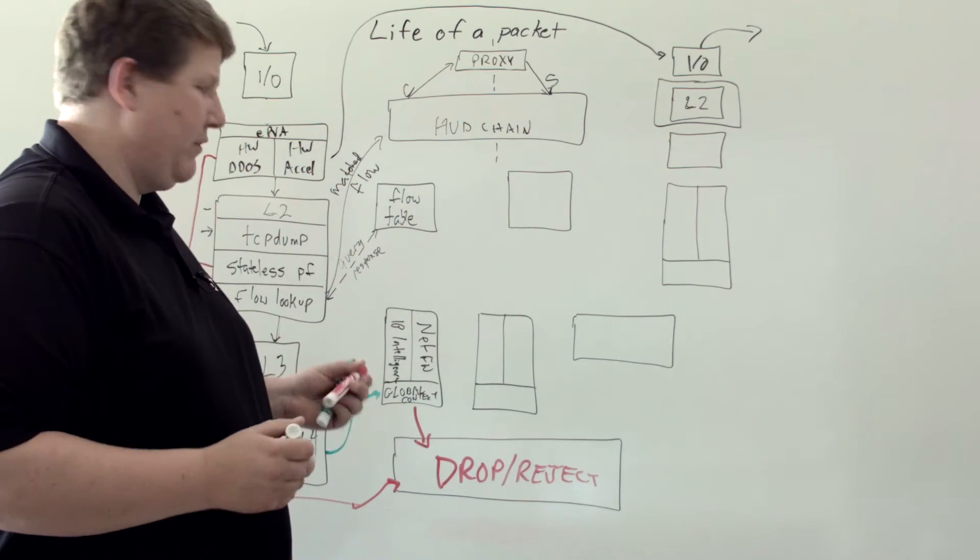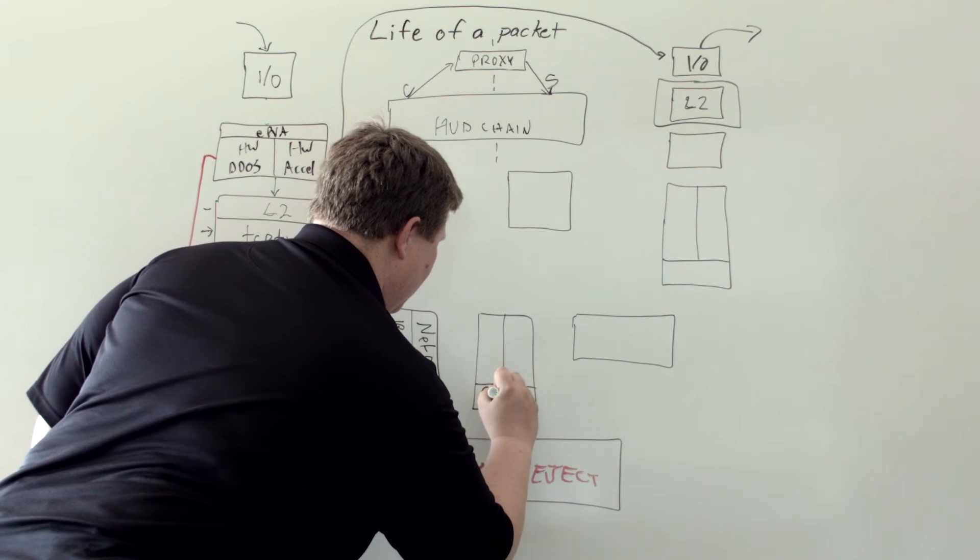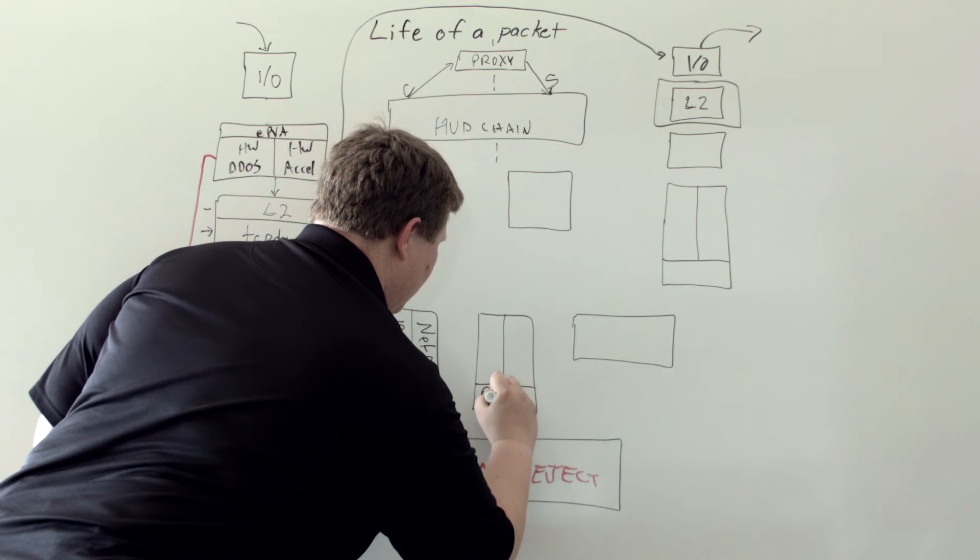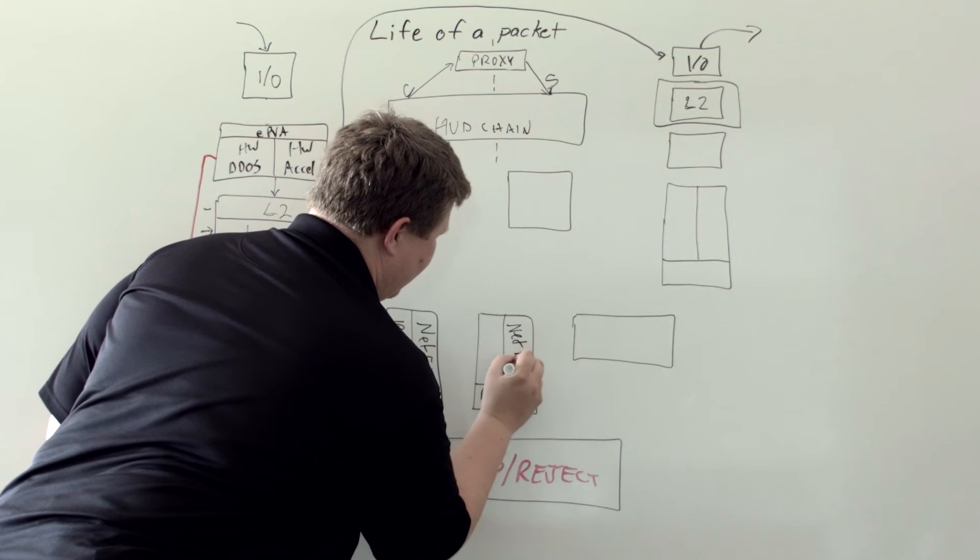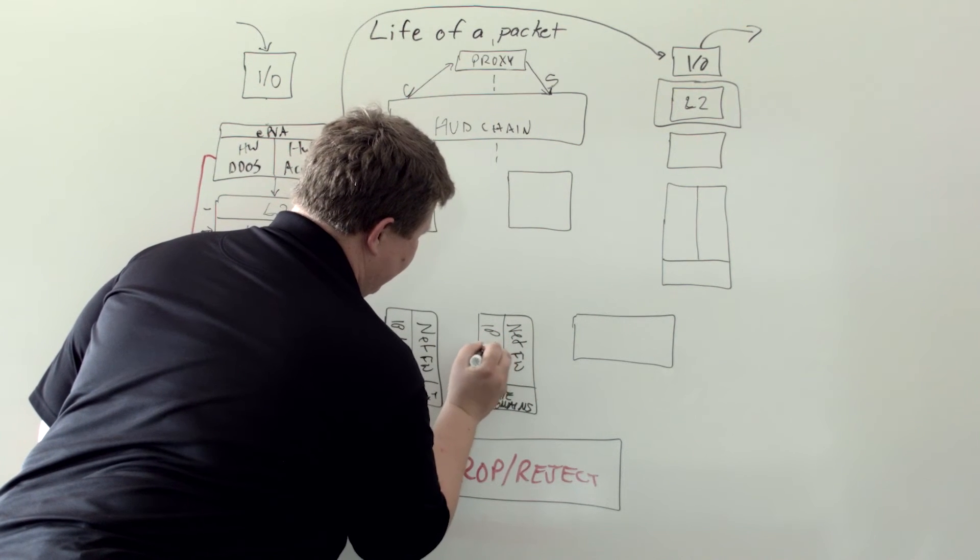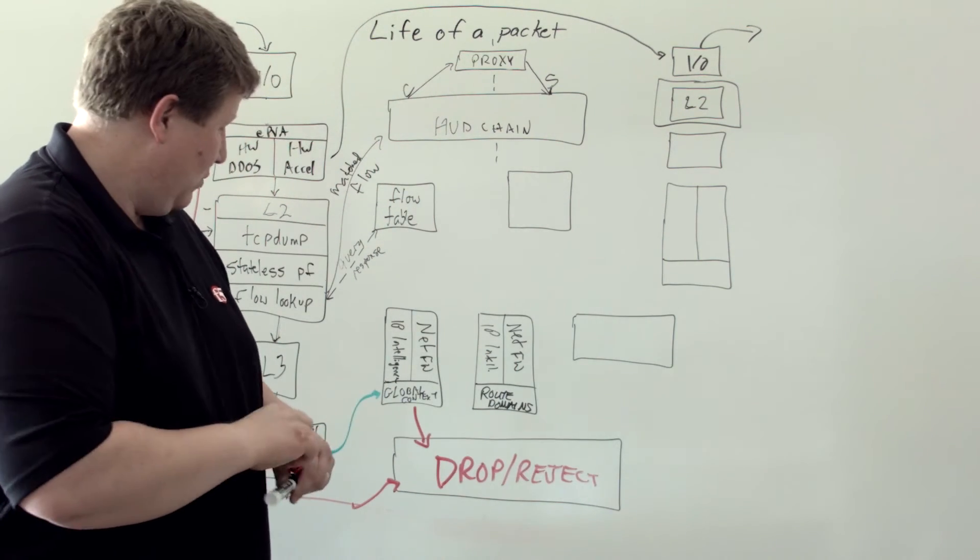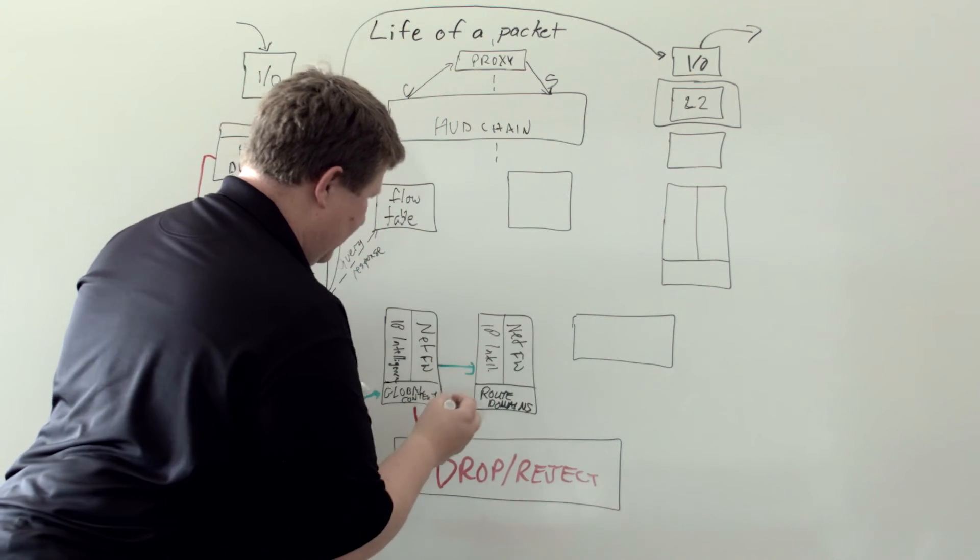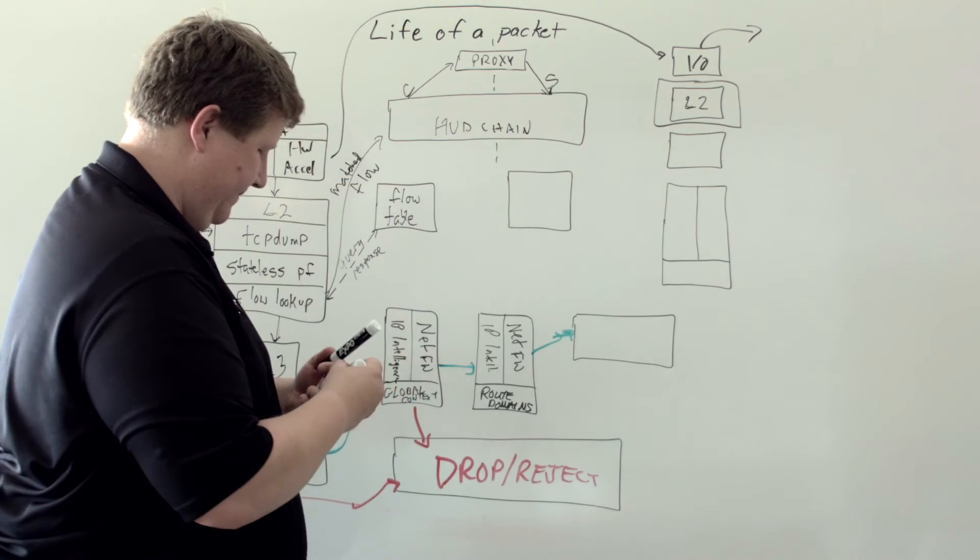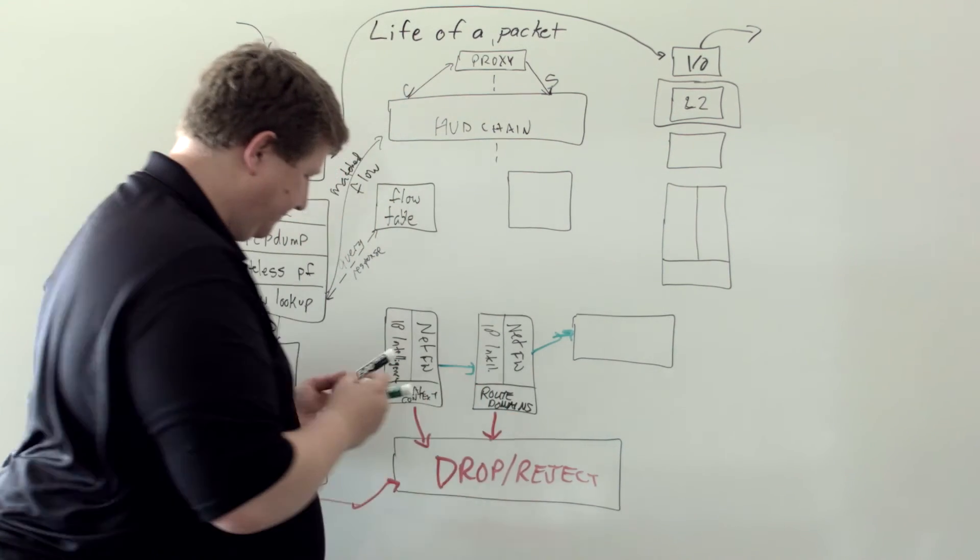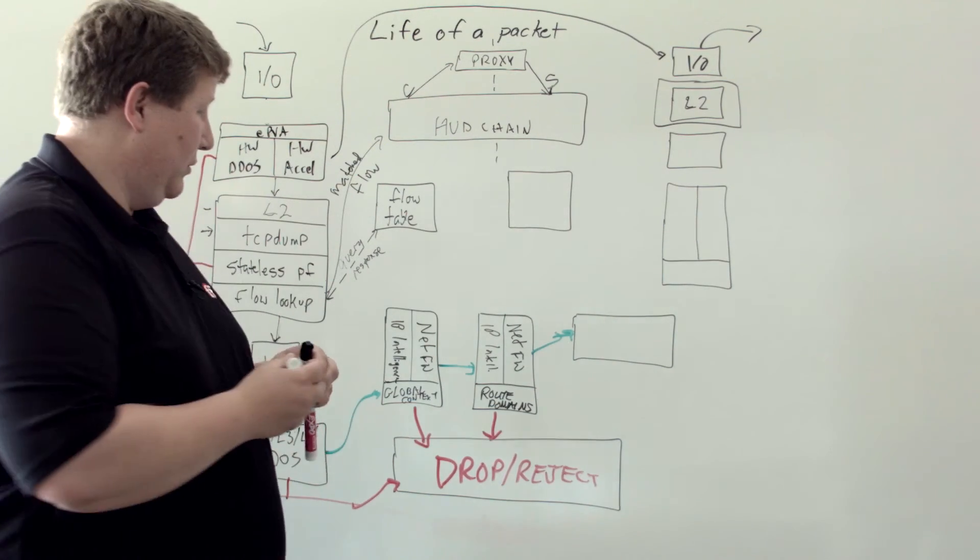After the global context, we're going to look at route domains. If we have any particular rules in the net firewall or with IP intelligence, then we will accept over to that level. Or we're going to drop down and drop and reject again. After we take a look at route domains, we're going to do a listener lookup.